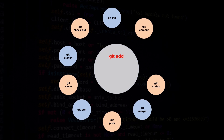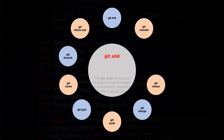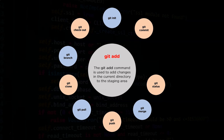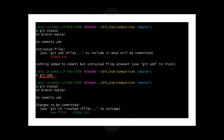The next command we will see is the git add command. The git add command is used to add files to the staging area. When the git add command is used with a full stop, it adds all the files in the repository to the staging area. We can see that before the add command there were untracked files, but after the git add command the files are added to the staging area.